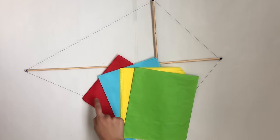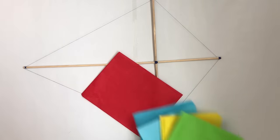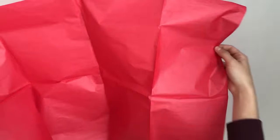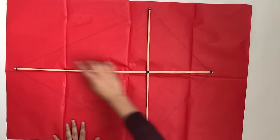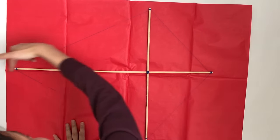Step three, then we make the body of the kite. We can use different colors but in this case, we are going to use red. Extend the shiny paper and put the kite on top. Make sure it fits because you are going to cut the shape.